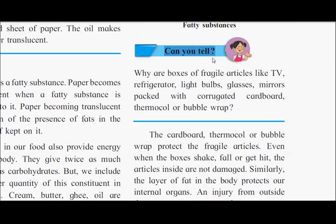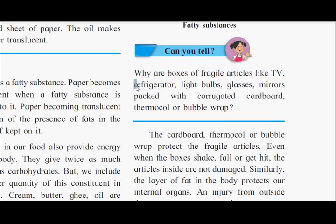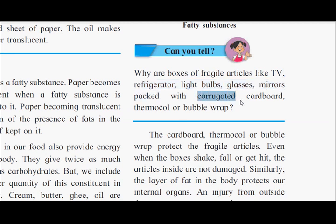Can you tell why boxes of fragile articles like TV, refrigerators, light bulbs, glasses, and mirrors are packed with corrugated cardboard, thermocol, or bubble wrap?